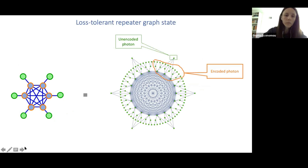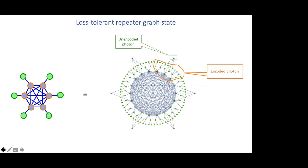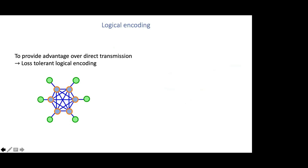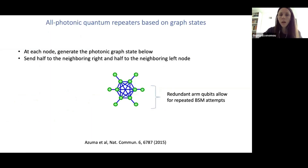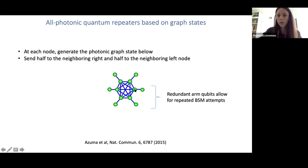Question from chat: how would you know which path succeeded? At the measurement node, as I receive the photons, I need to know which photon is connected directly to which — I need that labeling information. Once I have it, if a Bell measurement succeeds on one arm, I do an X measurement on the corresponding inner qubit. It doesn't matter which one succeeds on the other side because that inner qubit is connected to all of them.